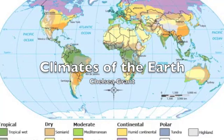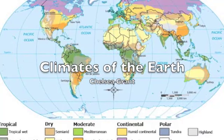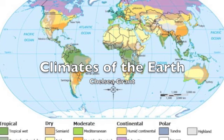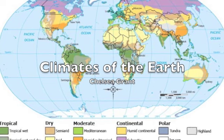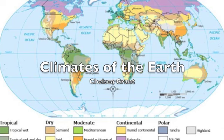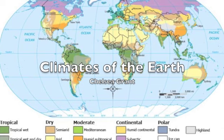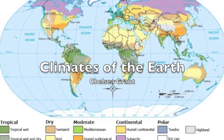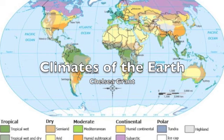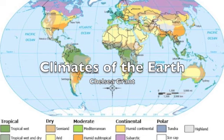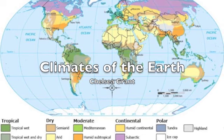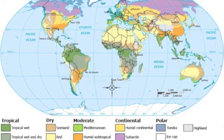Hey guys, today I'm going to teach you about the different climate types. Climate is usually defined as the weather conditions in an area over a long period of time. There are 12 different climate types found on Earth, and each of the 12 climate types are grouped into five categories.